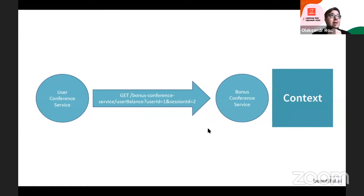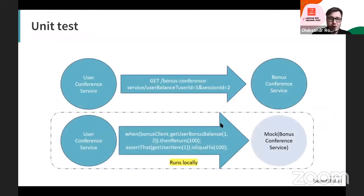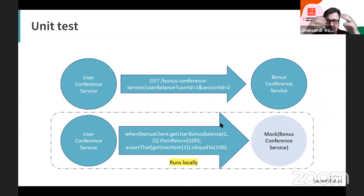So how can we test it? No matter whether it's the test engineer or the developer, the first thing we must do is unit testing. In unit testing, instead of making a call to the real implementation of the bonus service, we make a call to a mock. We instantiate a mock instance of the bonus service on the user service side and define all of the returned values — how the bonus service should behave.